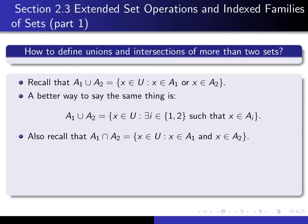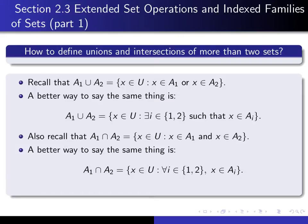Recall the definition of A1 intersect A2: it's the set of all X in our universal set such that X is an element of A1 and X is an element of A2. But a better way of saying that is that it's the set of all X in our universal set such that for every index I, either 1 or 2, X is an element of A sub I. This says exactly the same thing as the original definition, and the indexed form says exactly the same thing as the standard form.